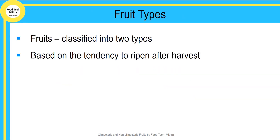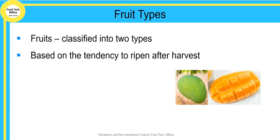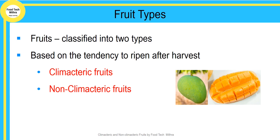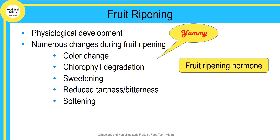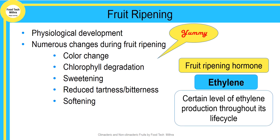Fruit, based on its tendency to ripen after harvest, can be classified into two types: climacteric and non-climacteric fruits. Ripening is a physiological development of the fruit — it is a process that makes the fruit more palatable. Ethylene is a gas known as the fruit ripening hormone. Every fruit has a certain level of ethylene production throughout its life cycle, but in some fruits the level of ethylene shoots up when the ripening starts. And numerous changes occur during the fruit ripening process.